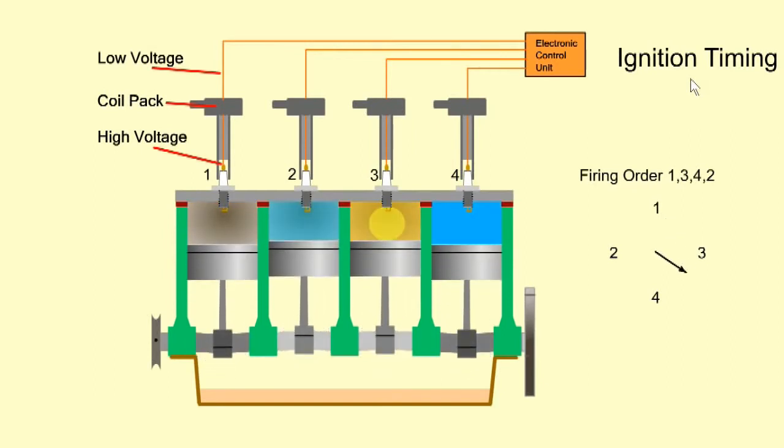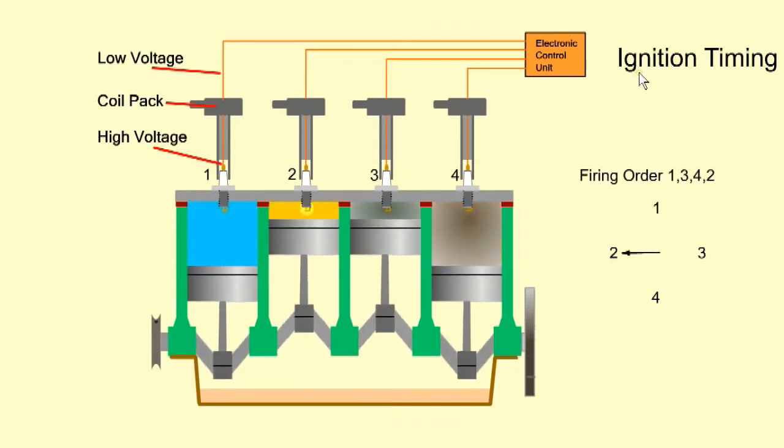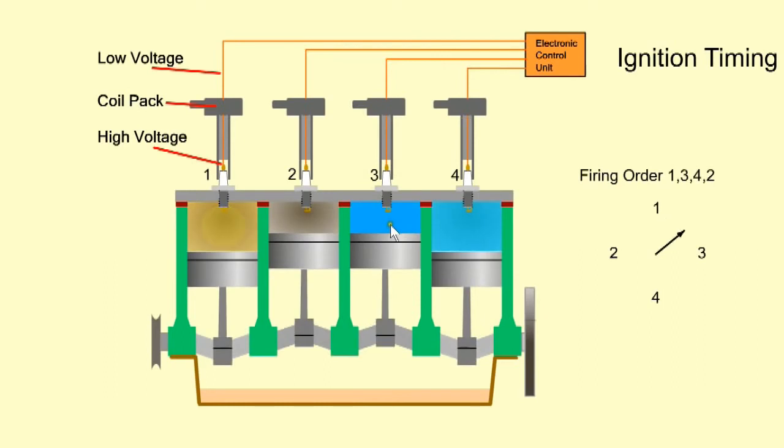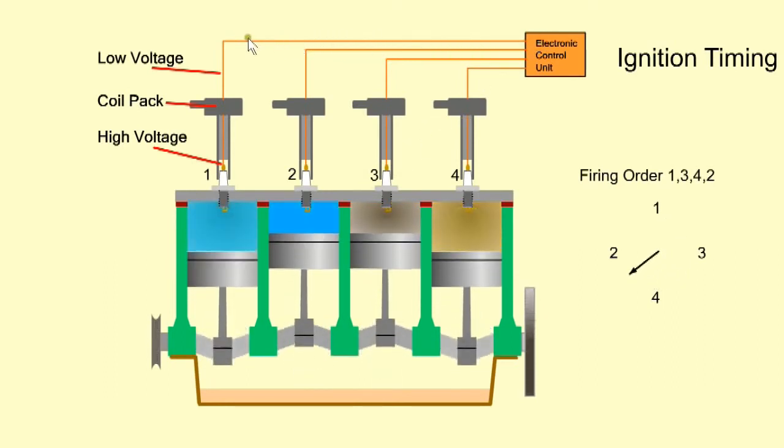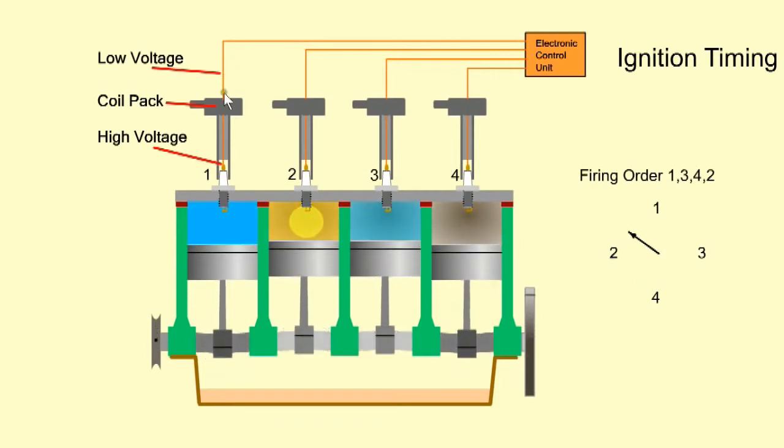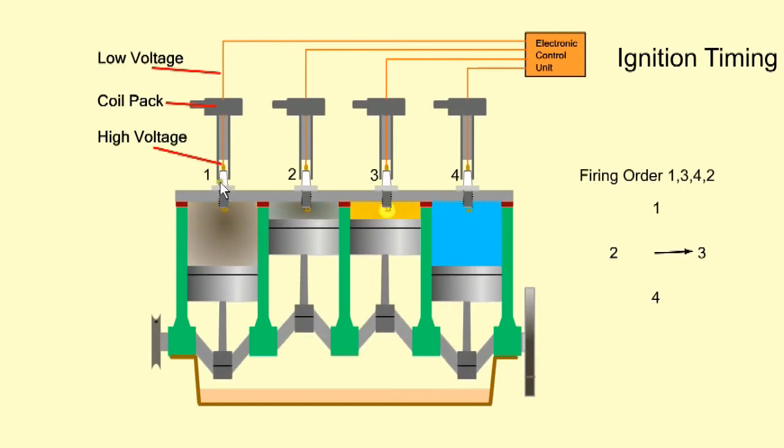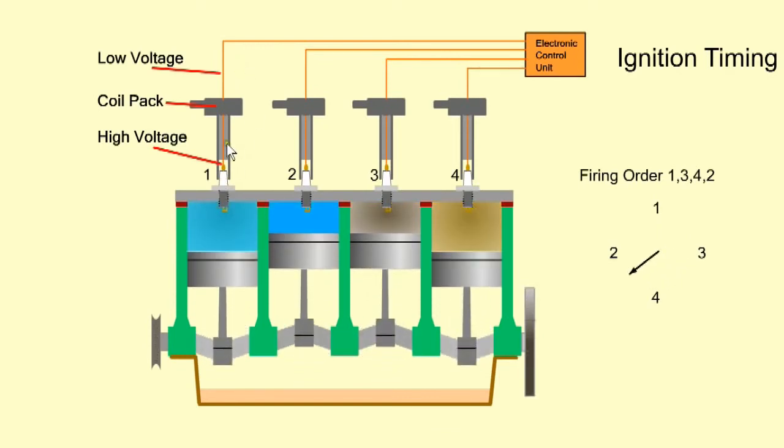We will now look at the outputs from the ECU. Ignition timing regulates the timing of the spark relative to top dead center. A signal is fed from the ECU via a relay to the relevant high-voltage coil pack, which is located on top of the spark plug. The coil pack transforms the signal to high voltage for the spark plug.